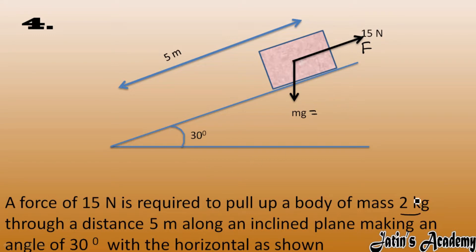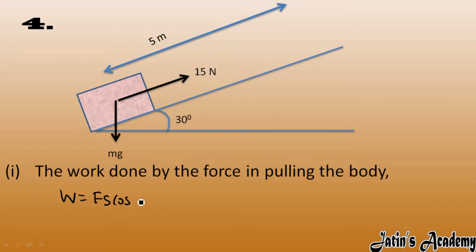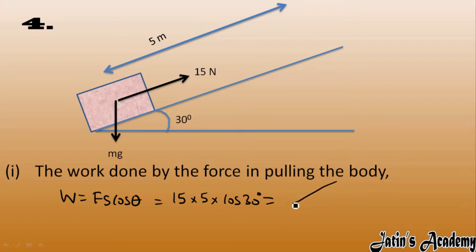We have to calculate first: the work done by the force in pulling the body — how much work is done by the force to pull this block on the inclined plane. Now, the major mistake most students will make is calculating work done as F·S·cosθ: force 50 N, displacement 5 m, and cos 30°. This answer is wrong.